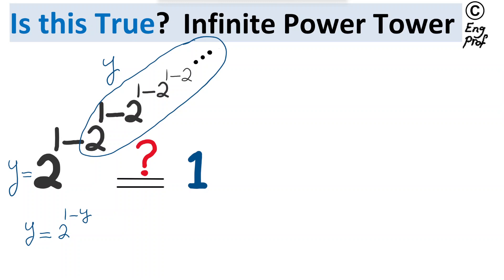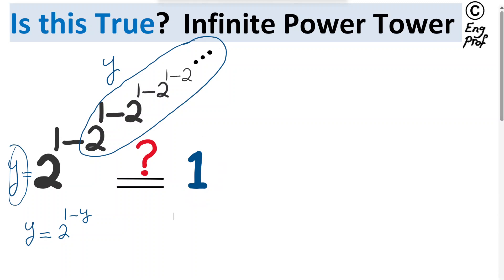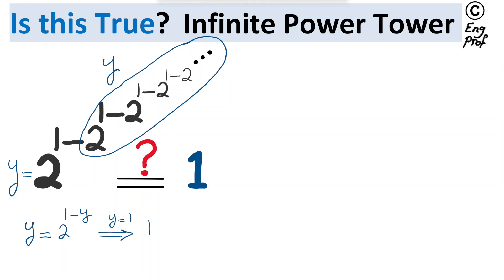A quick test — just a matter of checking. We are trying to prove that y equals 1. If that is the case, we can plug in to see whether it actually works. Set y equal to 1. We get on the left side: 1. On the right side, we have 2 to the power (1 minus 1), which is 2 to the 0, which is 1. So it checks out.